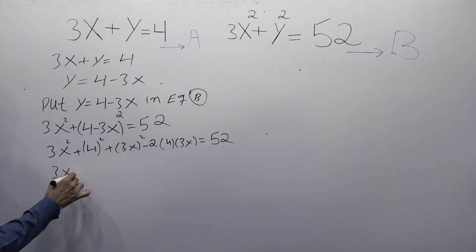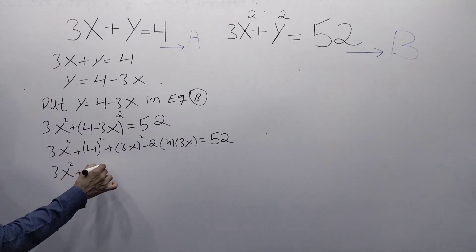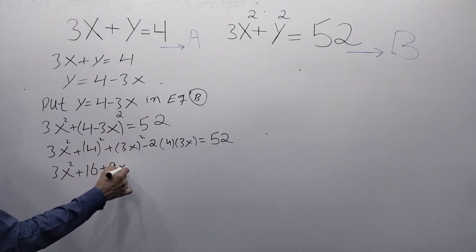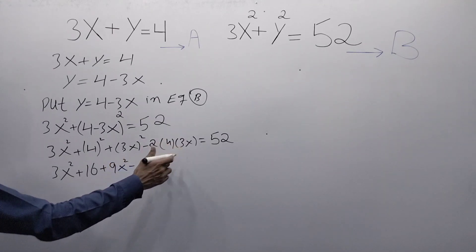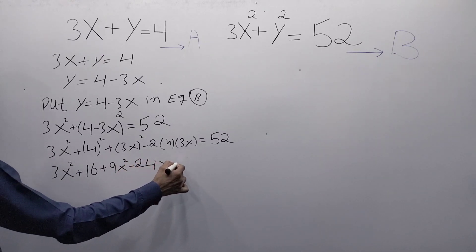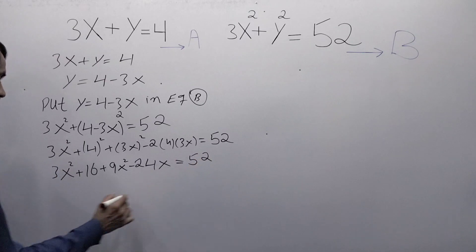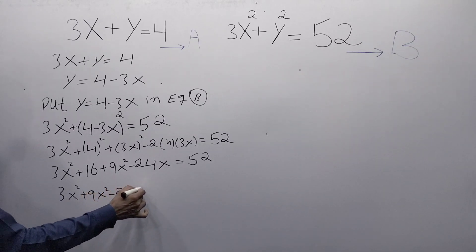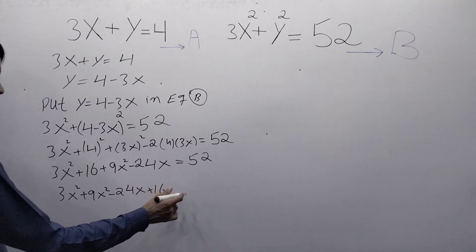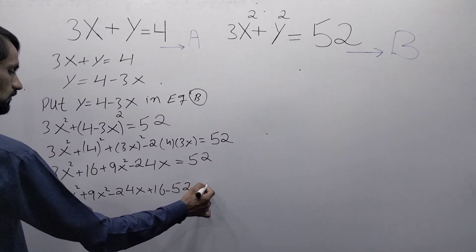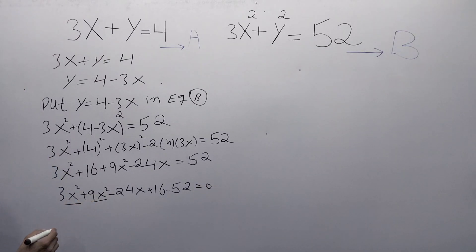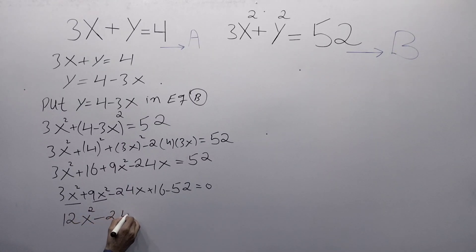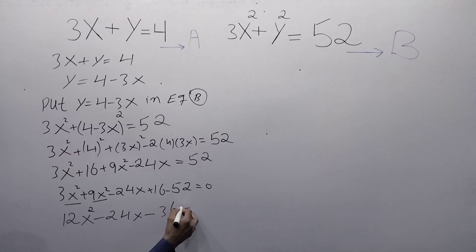Expanding: 3x squared plus 16 plus 9x squared minus 24x equals 52. Combining like terms, 3x squared plus 9x squared gives 12x squared, so we have 12x squared minus 24x plus 16 minus 52 equals 0, which simplifies to 12x squared minus 24x minus 36 equals 0.